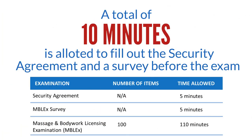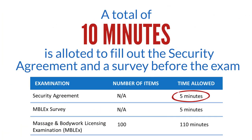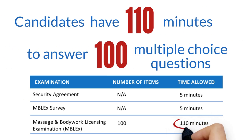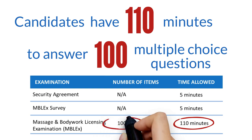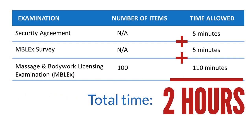A total of 10 minutes is allotted to fill out the security agreement and a survey before the exam. Candidates have 110 minutes to answer 100 multiple-choice questions. Five minutes to fill out the security agreement, plus five minutes to fill out the survey, plus 110 minutes to answer exam questions, equals a total time of two hours.